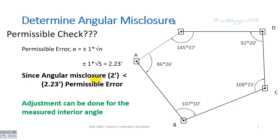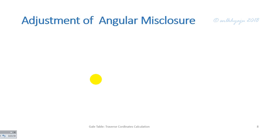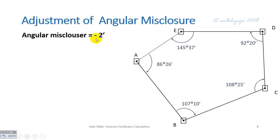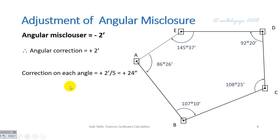For adjustment of angular misclosure: the total error is −2 minutes, so the angular correction equals +2 minutes. The correction on each angle equals the angular correction divided by the total number of angles, which is 5, giving +24 seconds per angle. We could add 24 seconds to each individual angle for angular adjustment.